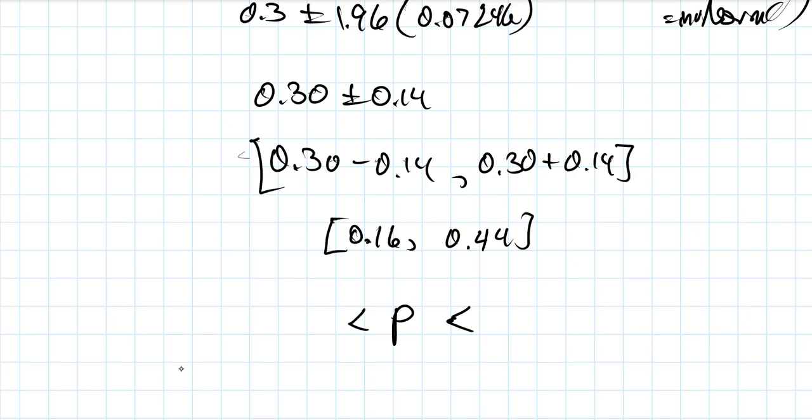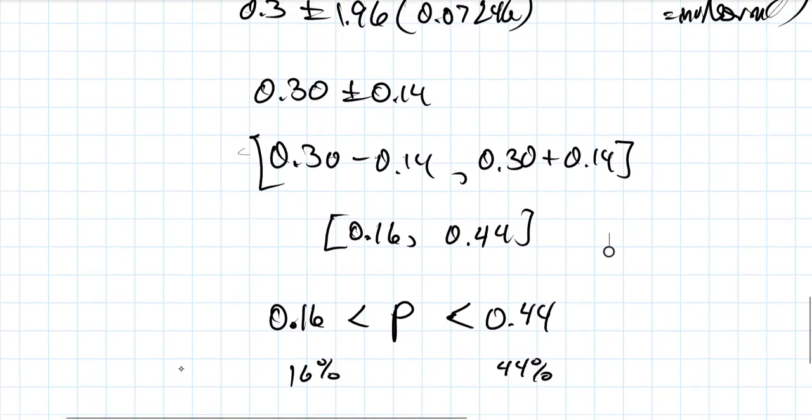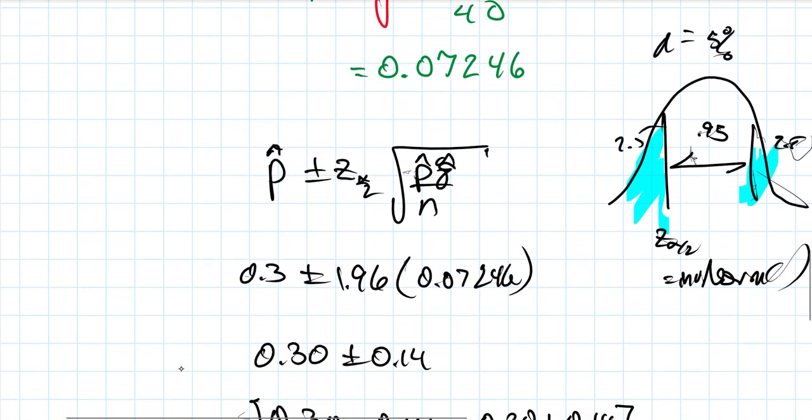So what that says is that the population value, the percentage of those machines out there in the population that are malfunctioning, is somewhere between 16% and 44%. That's the brief introduction to how we determine intervals for population proportions. It's mostly straightforward.